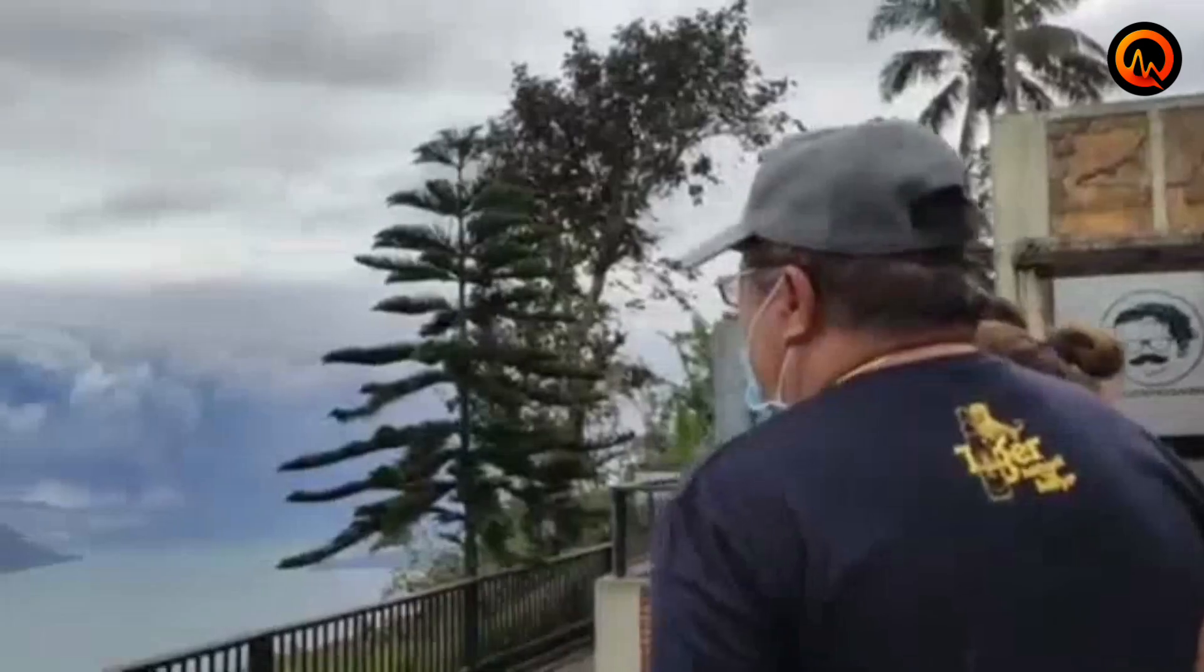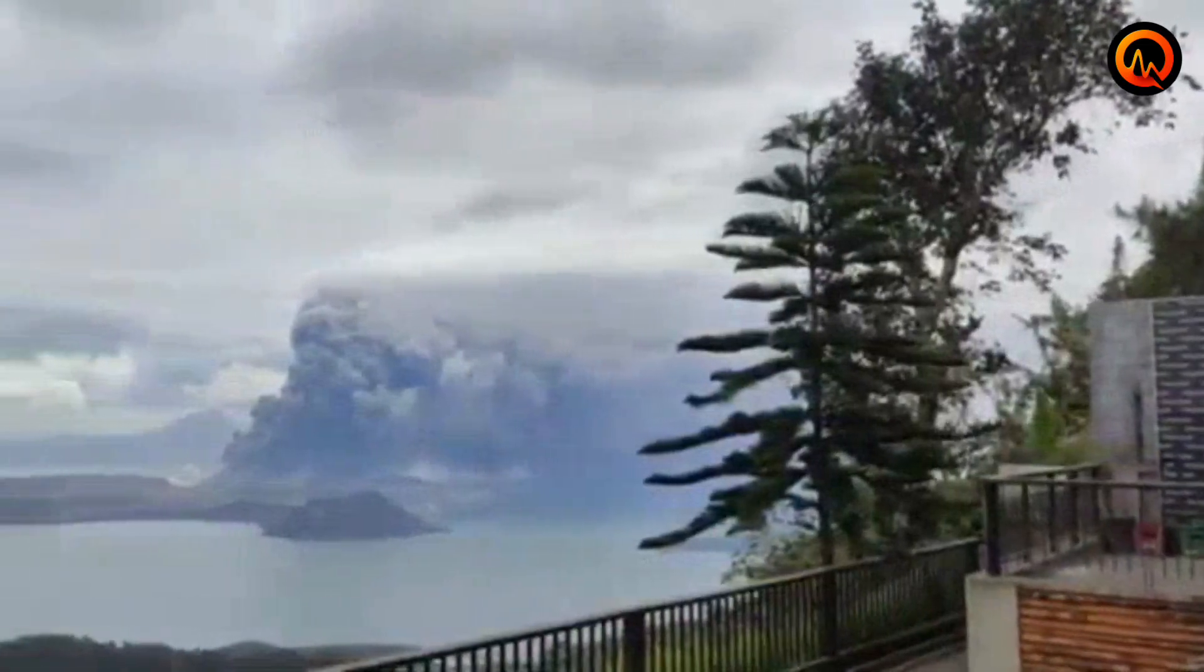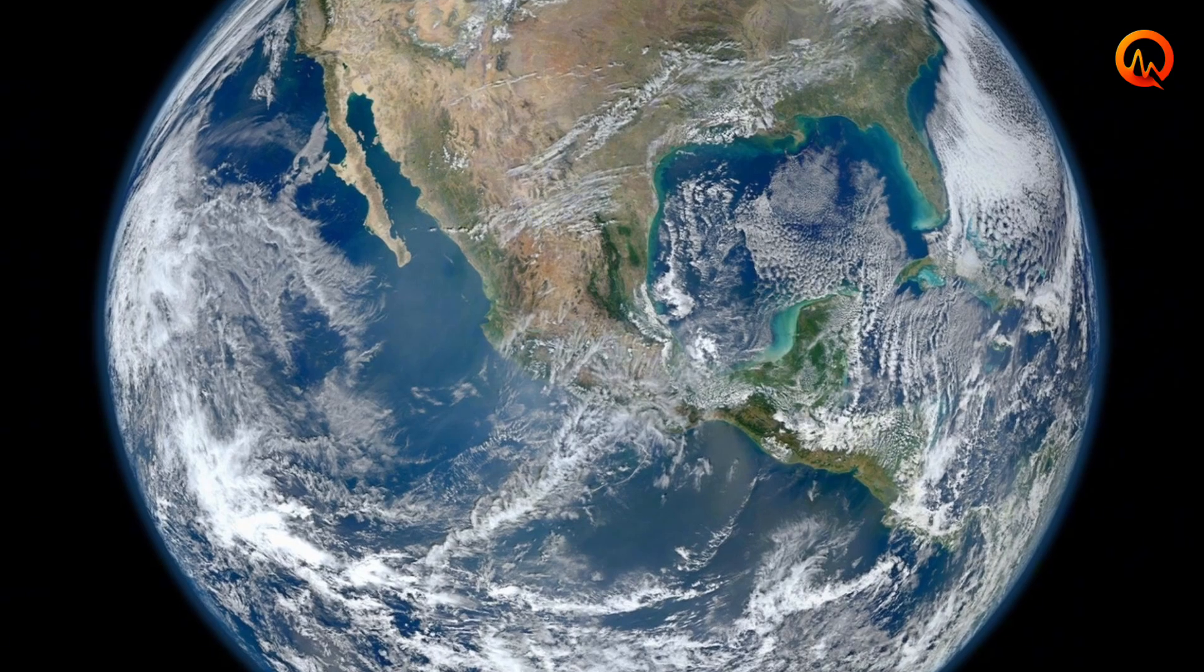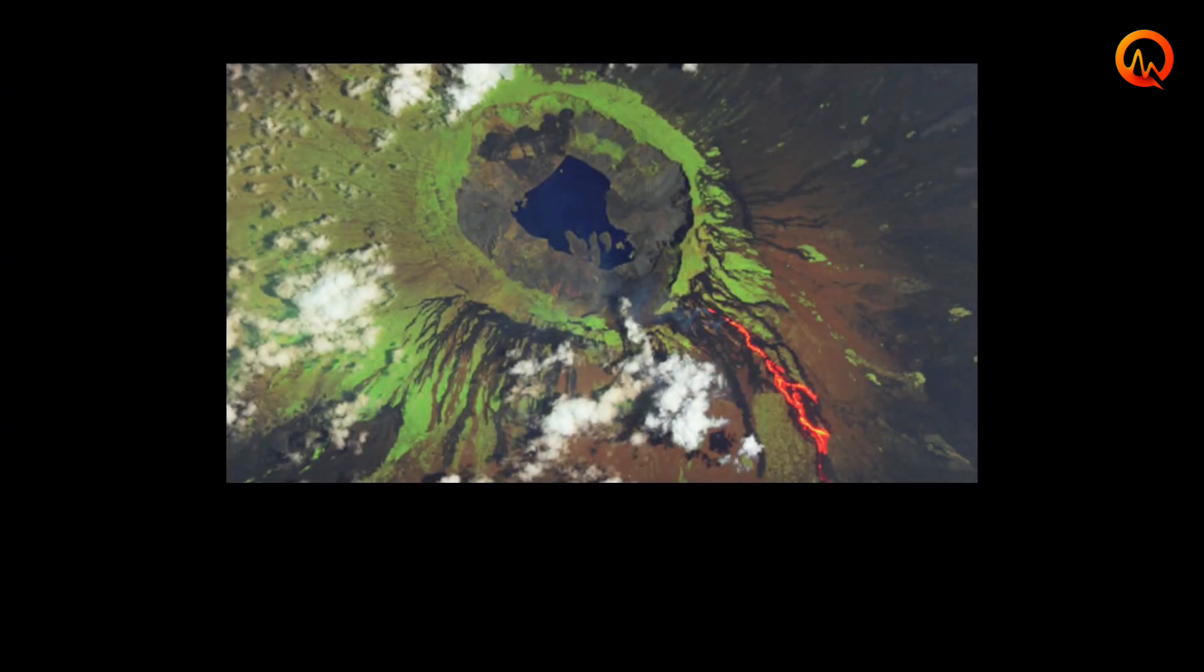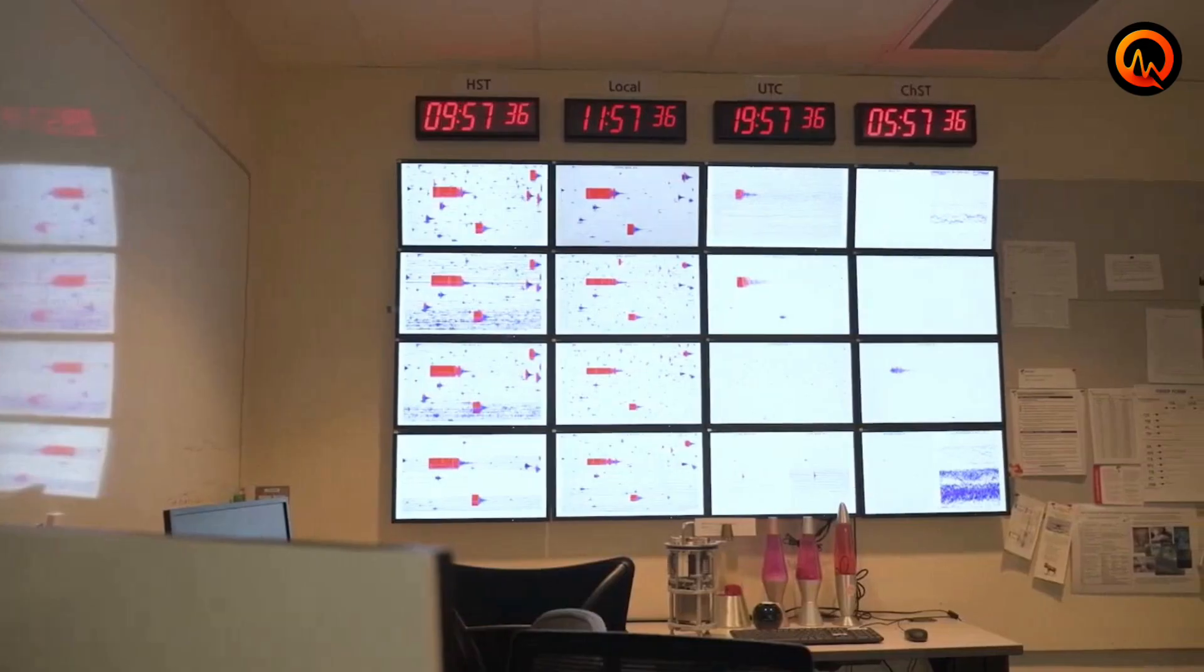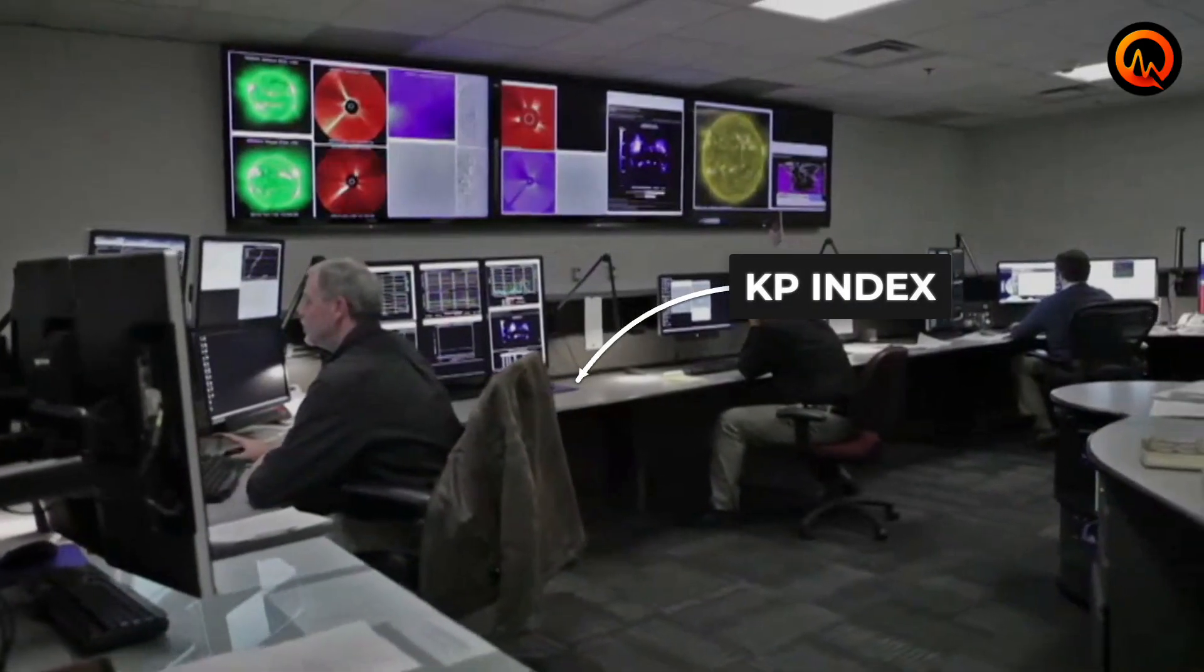The clustering pattern we are witnessing demands serious attention from coastal and volcanic communities worldwide. Current risk assessment models typically evaluate volcanic threats on a regional basis, but this global synchronization suggests we need to think about volcanic hazards from a planetary perspective. Early warning systems are already adapting to track both solar and seismic activity simultaneously.